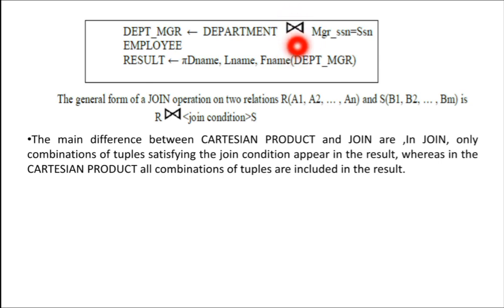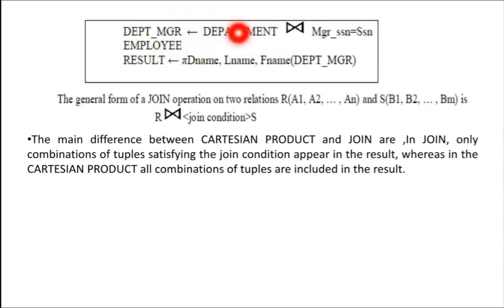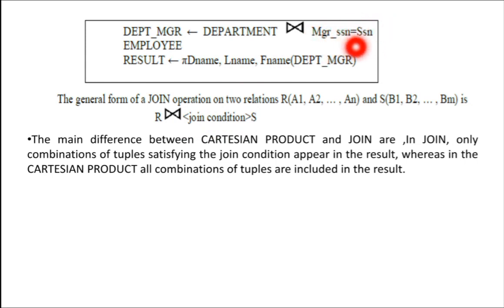This is the symbol to denote the join operation. I am joining the department and employee tables here. The join condition is: Manager SSN should be equal to the SSN of the employee, because the manager is also an employee who has an SSN. So whatever the employee SSN equals the Manager SSN identifies the manager from the set of employees.